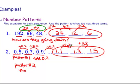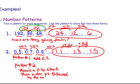there's a 0 to start, then a decimal point, followed by the next odd number. There's a 0 to start, then a decimal point, followed by the next odd number.